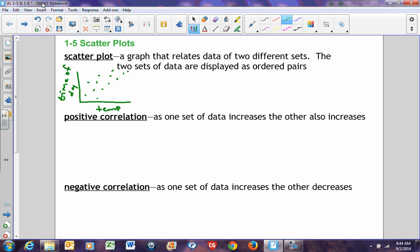When you work with a scatter plot, you can have three different types of correlation. You can have a positive correlation, which says as one set of data increases, so does the other set of data. A positive correlation will look something like this. As one thing goes up, as this increases this way, this increases this way.